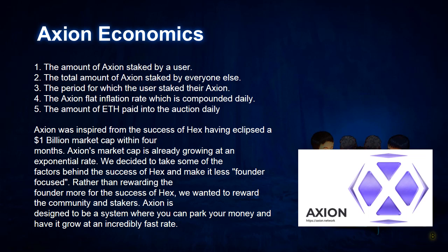The 5 principles of Axion Economics: 1. The amount of Axion staked by a user. 2. The total amount of Axion staked by everyone else. 3. The period for which the user staked their Axion. 4. The Axion flat inflation rate, which is compounded daily. 5. The amount of ETH paid into the auction daily.